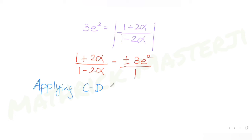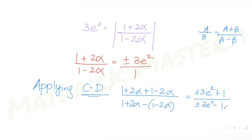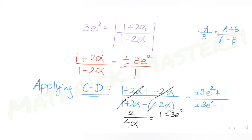Applying componendo-dividendo: if a/b = k/1, then (a + b)/(a - b) = (k + 1)/(k - 1). So adding and subtracting numerator and denominator on both sides: (1 + 2α + 1 - 2α)/(1 + 2α - 1 + 2α) = (±3e² + 1)/(±3e² - 1). This simplifies to 2/(4α) = (±3e² + 1)/(±3e² - 1), giving 1/(2α) = (±3e² + 1)/(±3e² - 1).